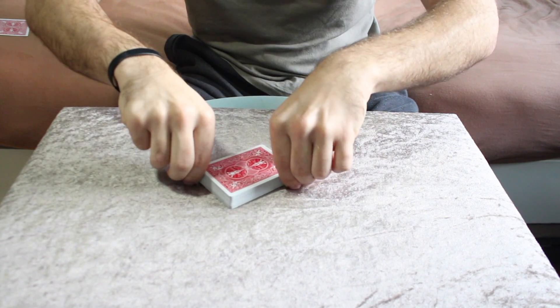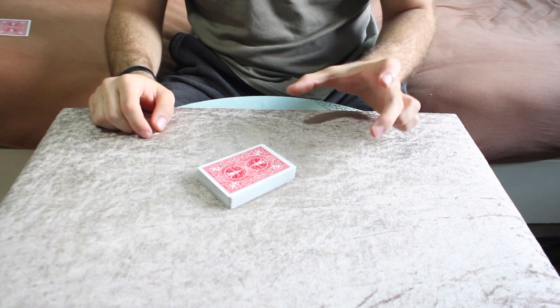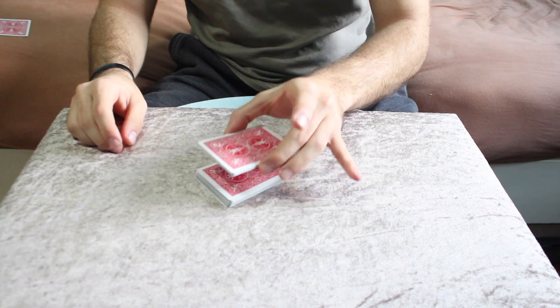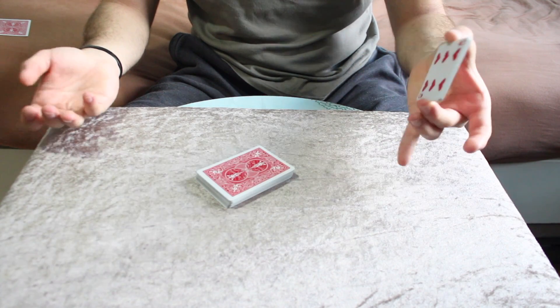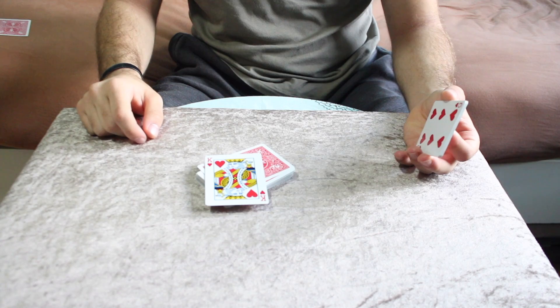Now, you take the pack, square them up. As I've said at the beginning, you just go ahead with your middle finger and thumb, lift up the pack. So it cuts automatically. And the card you will cut to will be their selection.